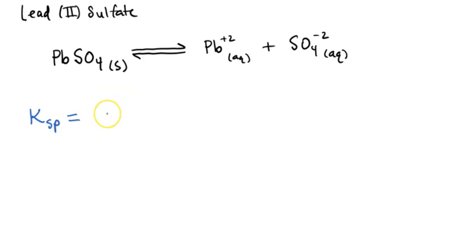But in this case, we remember that we don't include pure solids in our equilibrium expressions. So the Ksp expression for this example would just be the product of the concentration of Pb2+ ions and the concentration of SO4(2-) ions. There in blue, that would be the solubility product expression for the dissolution of lead(II) sulfate.